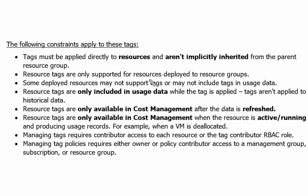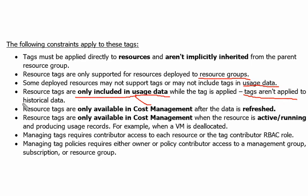Resource tags are only supported for resources deployed in a resource group. Some deployed resources may not support tags, depending on resource type — they may not include tags in usage data. Resource tags are only included in usage data while the tag is applied. Tags aren't applied to historical data, so we cannot use any historical data and apply tags on them.